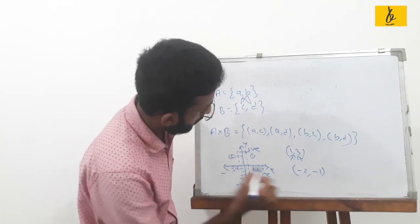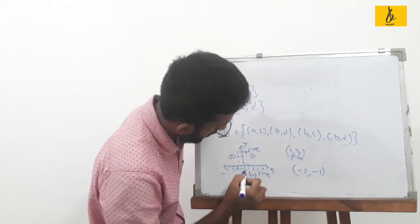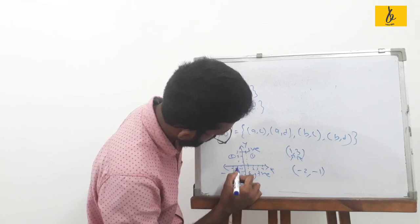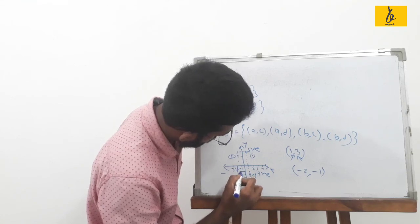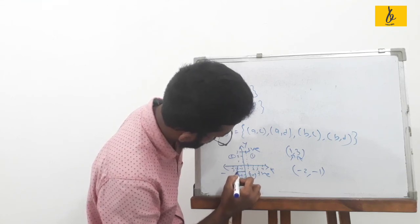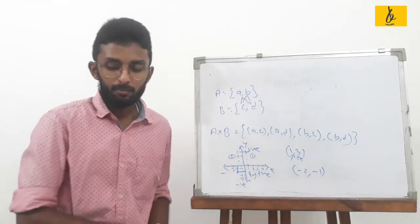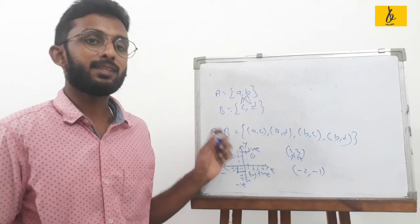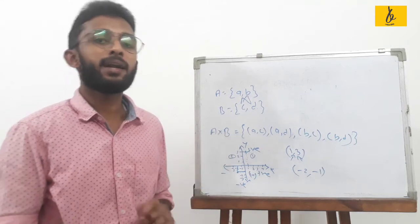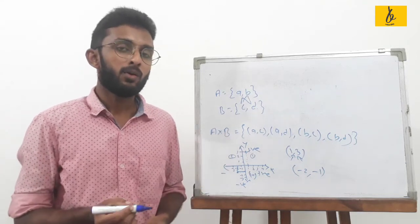So, for x=-2 and y=-1, we add the point in the coordinate system.